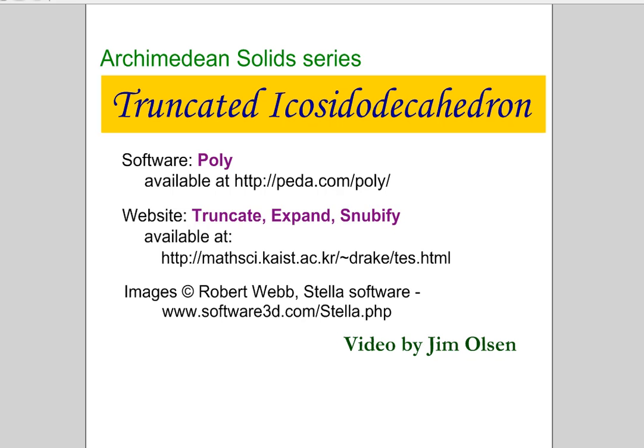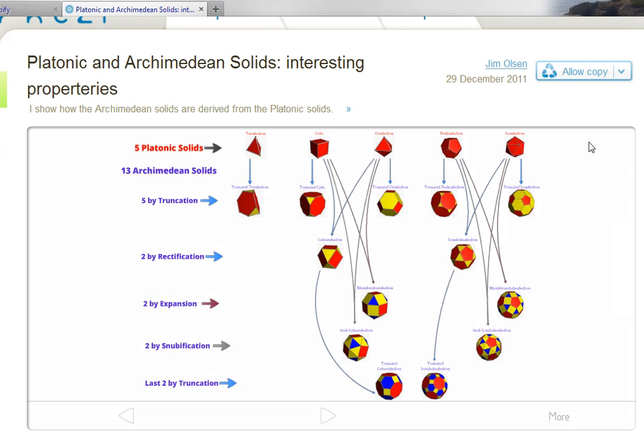In this series, I'm explaining how the Archimedean solids can be derived from the five platonic solids, also trying to make sense out of these strange names. In this schematic across the top, we see the five platonic solids. The 13 Archimedean solids are found as follows.